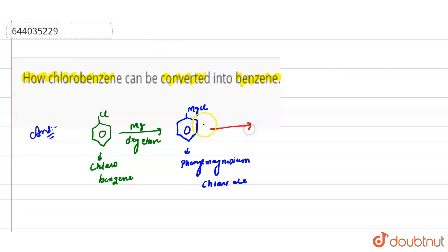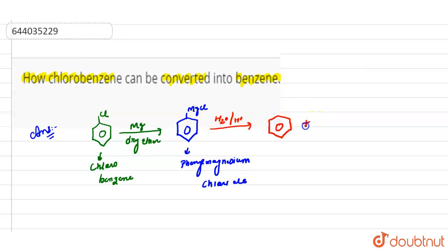When this Grignard reagent undergoes hydrolysis in the presence of acid, we get benzene, and the byproduct is Mg(OH)Cl. So we got benzene from chlorobenzene.